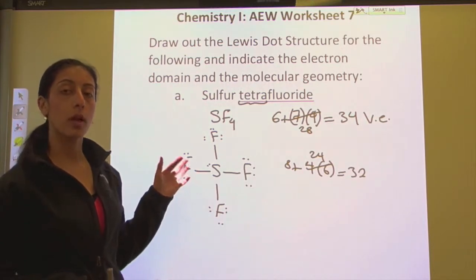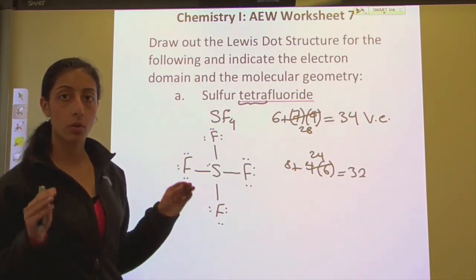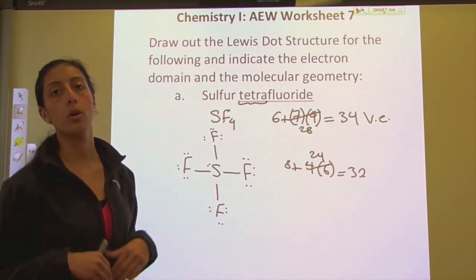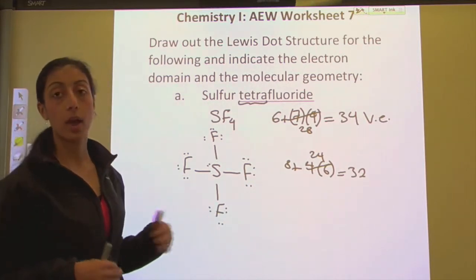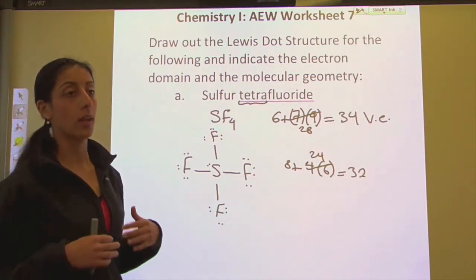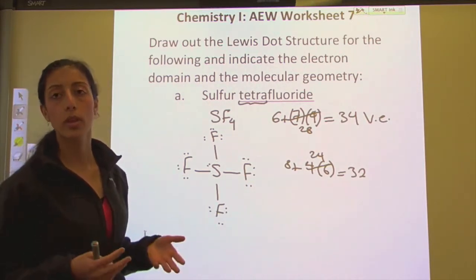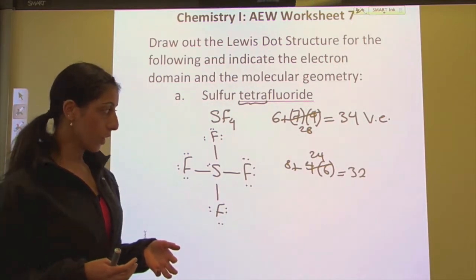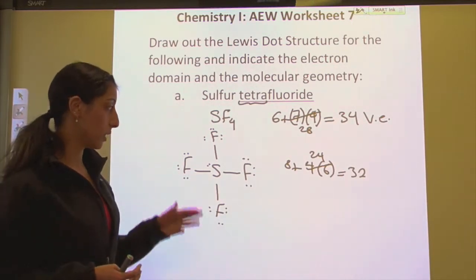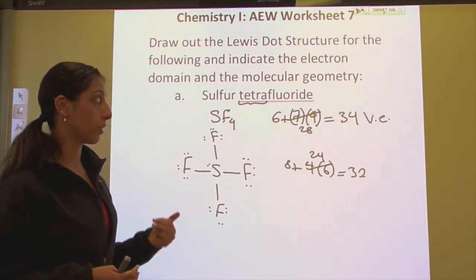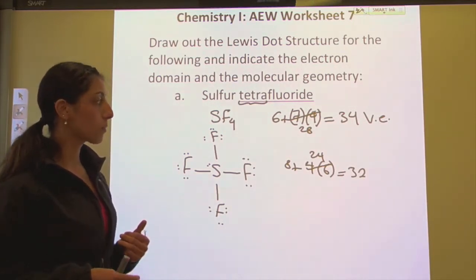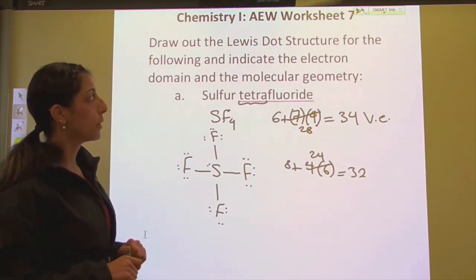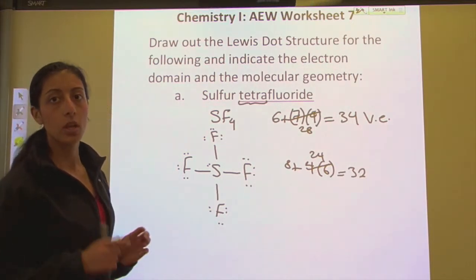The rule is that all atoms in the third row or below can have a hyperoctet — they can have hypervalence, meaning more than eight electrons in their valence shell. Sulfur is one of them. Now let's determine the molecular geometry and electron domain geometry.